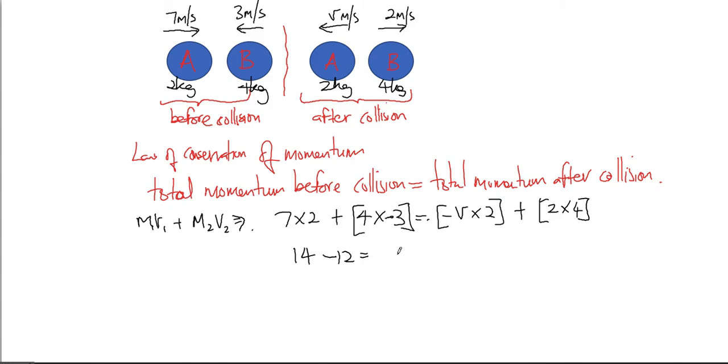And if I move that over, that is negative 6 equals negative 2v. So v equals 3 meters per second.